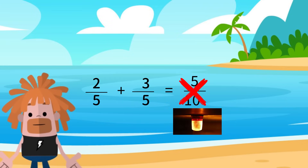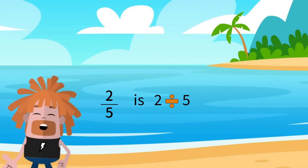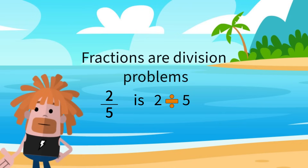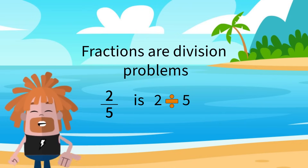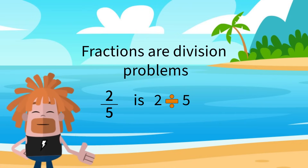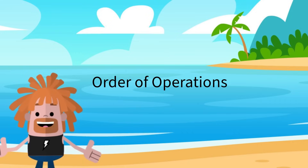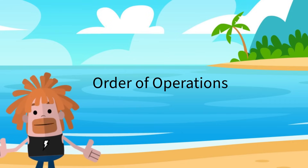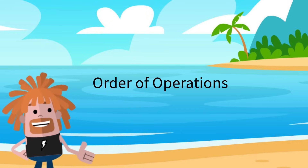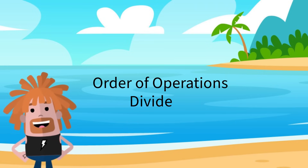Remember, fractions are division problems. So if we add across by just adding our numerators and our denominator, we are not following the correct order of our operations. According to the order of operations, we need to divide before we can add or subtract.